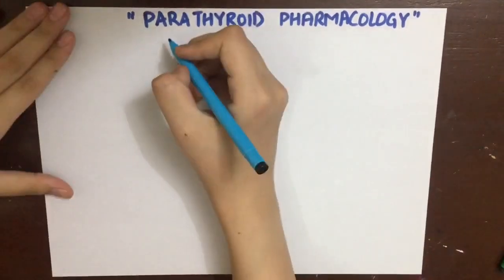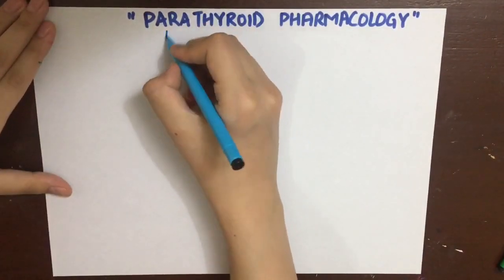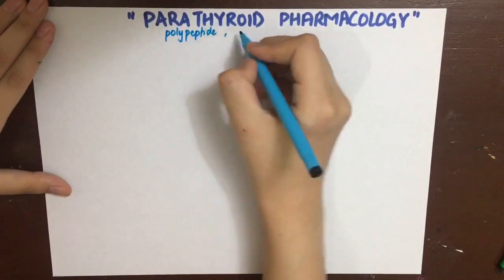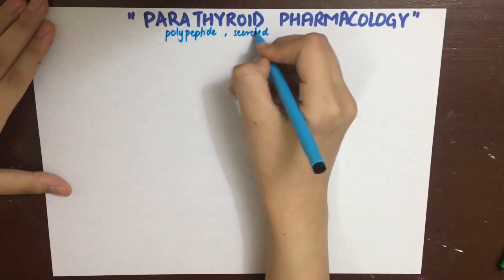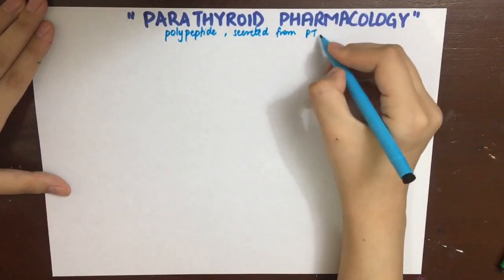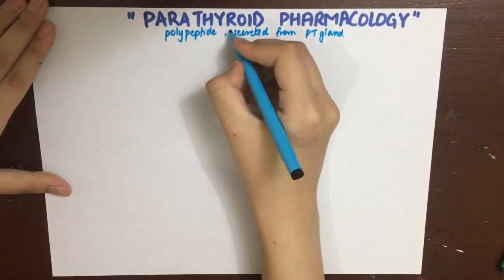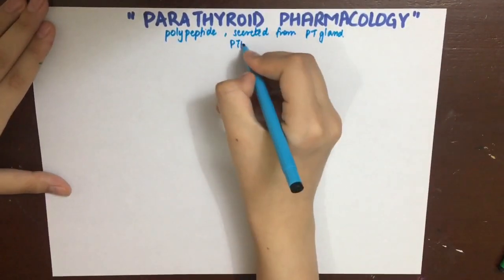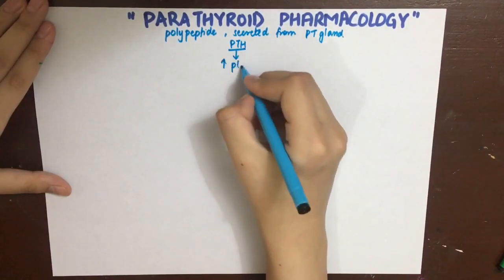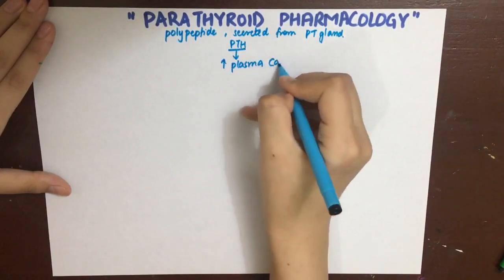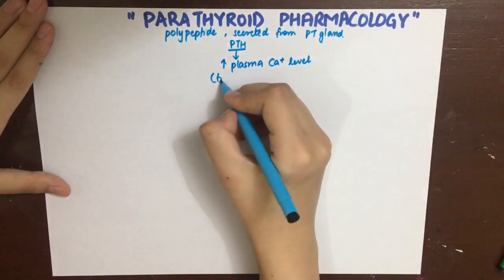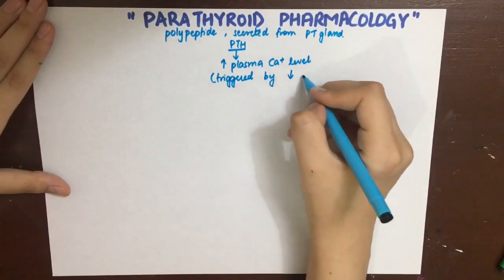Parathormone is a polypeptide hormone secreted from the chief cells of the parathyroid gland. Its chief function is to increase plasma calcium levels, and its secretion is triggered by low plasma calcium levels.